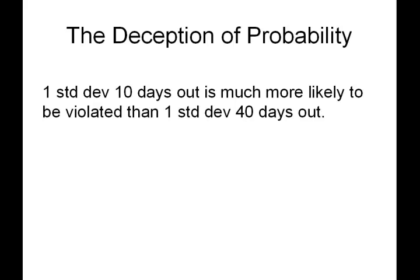The deception of probability: one standard deviation ten days out is much more likely to be violated than a one standard deviation forty days out. Basically what this is saying is that the theory of probability says that one standard deviation — the probability of something happening in one standard deviation — should always be the same regardless of the time frame. However, that's not really true in real life, and it's not really something that common sense would tell you is true.